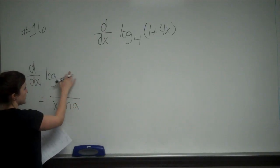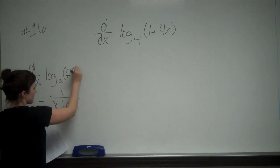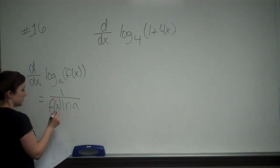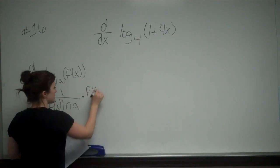So, in our case, when we have a g of x or an f of x, it's going to be 1 over f of x times ln of a times the derivative, again, of the inside, so f prime of x.